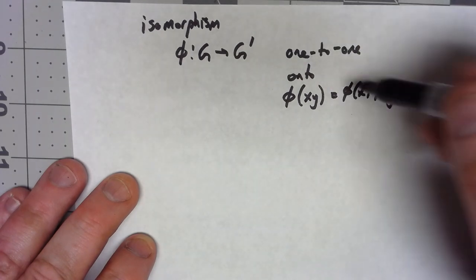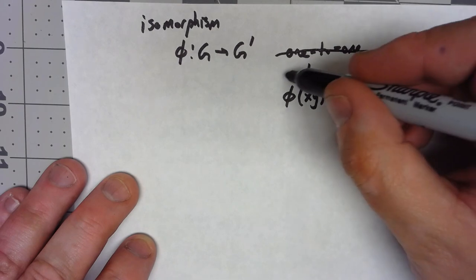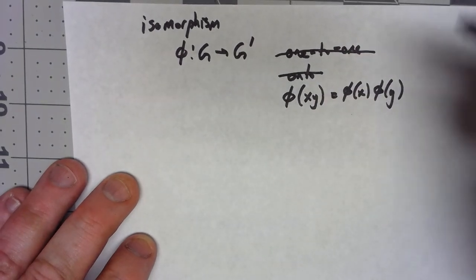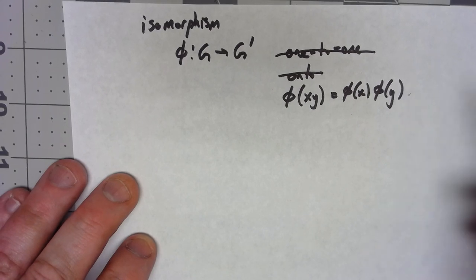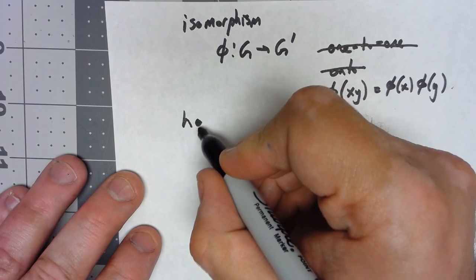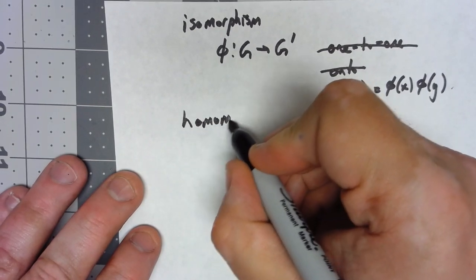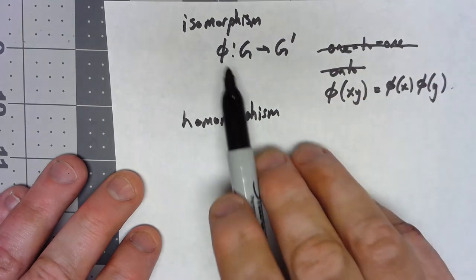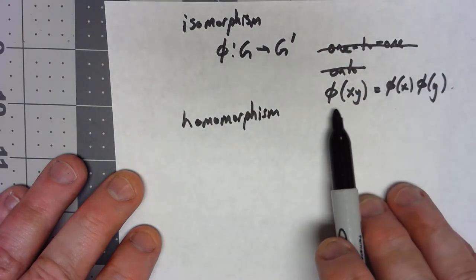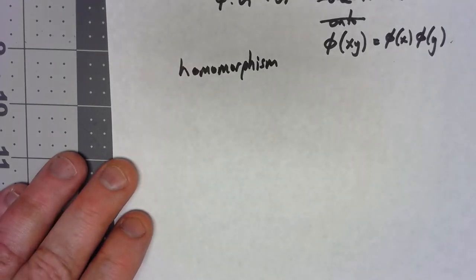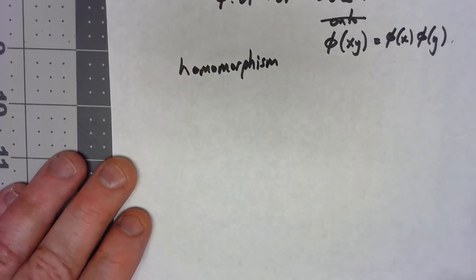Now it turns out that if we get rid of the requirements that it be one-to-one and onto and only stick with this preserving the operation, we get what we call a homomorphism. It's all the same thing, we've got a function from G to G prime and it has to preserve the operation and that's it. This allows us to do some interesting things.